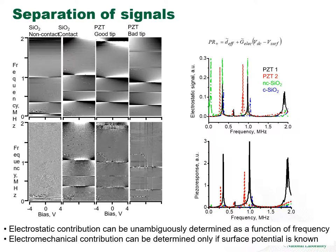To separate these signals, we can measure signal dependence on bias for each frequency, fit a linear function, and use the slope as a measure of the electrostatic signal. The PFM signal is the offset of this function, but only if the electrostatic contribution is known independently. This is shown for LZT and silicon oxide in contact and non-contact. The electromechanical contribution can be determined only if surface potential is known independently — something we can explore further through the technique of contact KPFM.